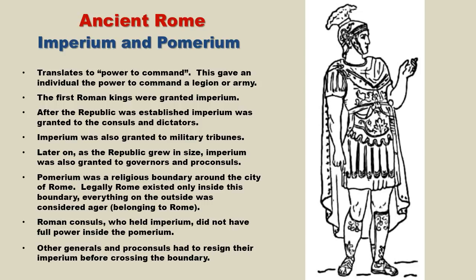Early on that worked just fine, but as the Republic grew in size and added province after province, it wasn't practical to grant Imperium just to the consuls and tribunes. The Republic had garrisons and troops all over the place in some very remote places, so again it just wasn't practical. Therefore, Imperium was also granted to governors and proconsuls as well, and they could then issue orders to the legions.